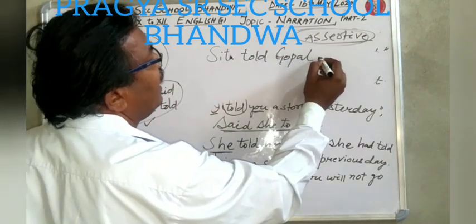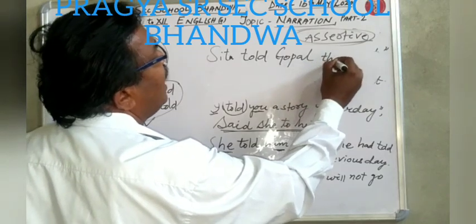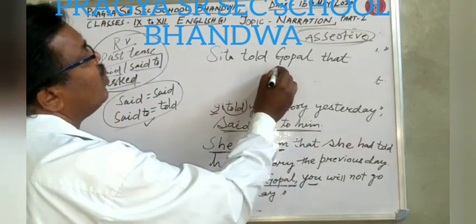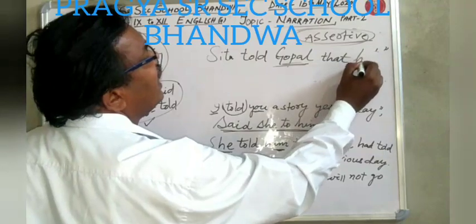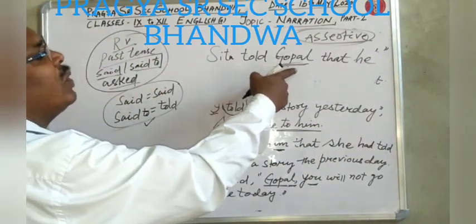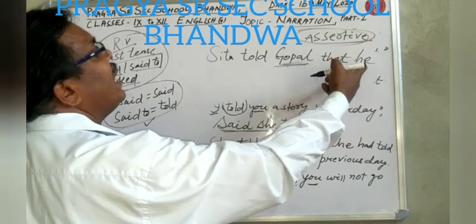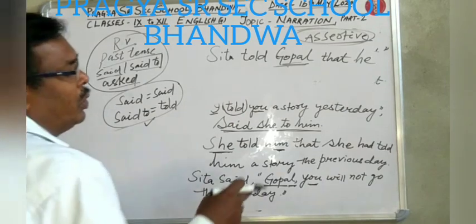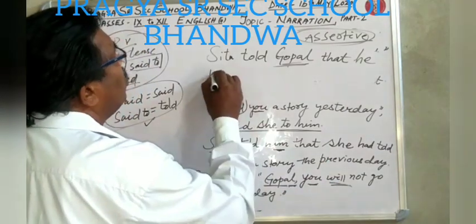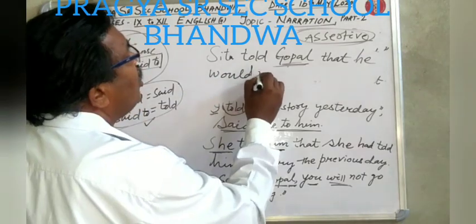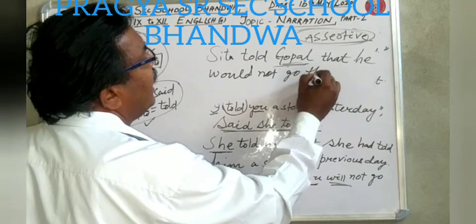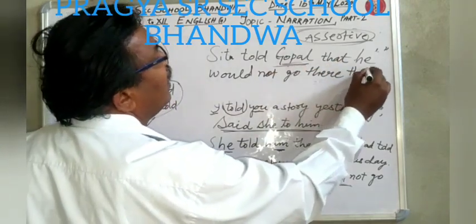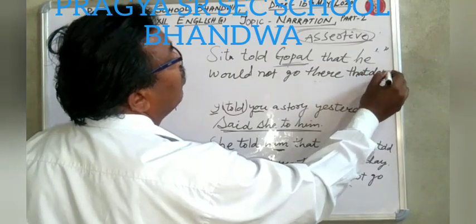We write: Sita told Gopal that. Here 'you' is second person, changed according to object Gopal. Gopal is third person singular male, so we use the pronoun 'he'. Then 'will' is changed to 'would': he would not go there. 'Today' is changed to 'that day'. So the answer is: Sita told Gopal that he would not go there that day.